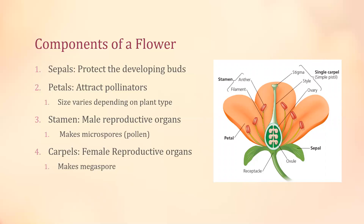The next is stamen. These are your male reproductive organs. Stamen is actually made up of an anther and a filament — these are things you're going to want to remember. The main purpose of the stamen is to make microspores, or your pollen. Finally, we have carpals, which are the female reproductive organs, and their main purpose is to make the megaspore.